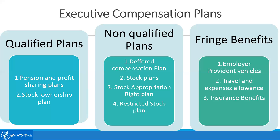The second fringe benefit is travel and expense allowances. These allowances are taxable to the employee unless the employee is required to account for their expenses and return any excess amounts to the company. Amounts that are not properly documented are taxable.